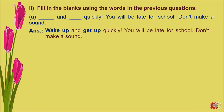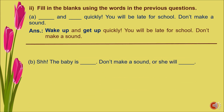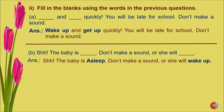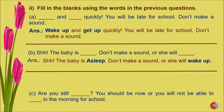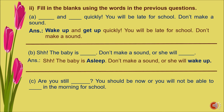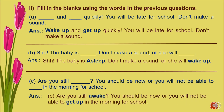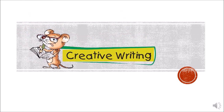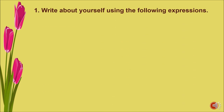Sentence B: shoo — the baby is asleep, don't make a sound or she will wake up. Sentence C: are you still awake? You should be asleep now or you will not be able to get up in the morning for school.